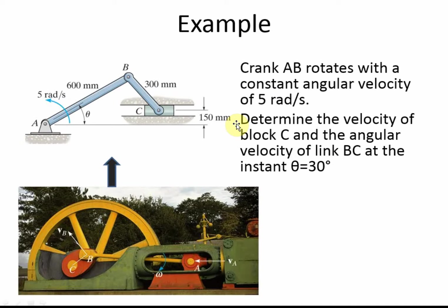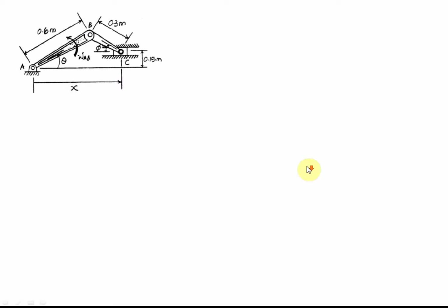This next example is a bit more challenging. Crank AB is connected to crank BC. We want to find the velocity of block C and the angular velocity of link BC at the instant when theta equals 30 degrees. The given condition is that omega AB equals 5 radians per second.